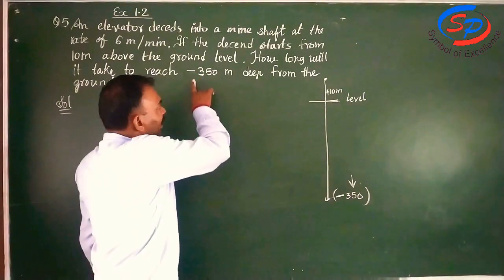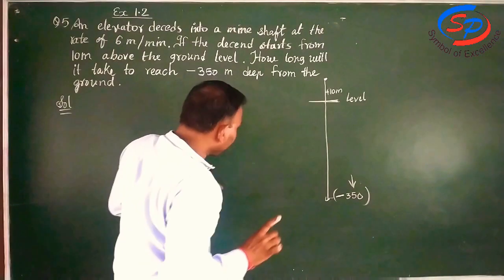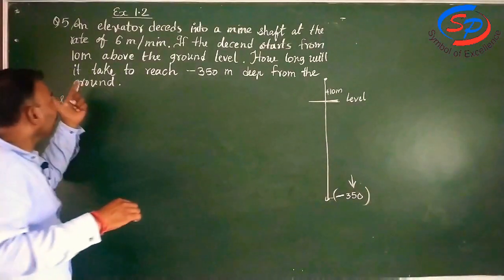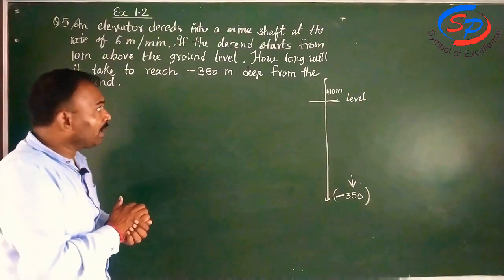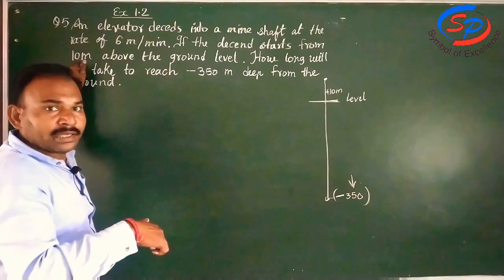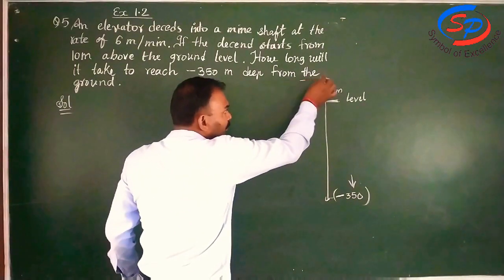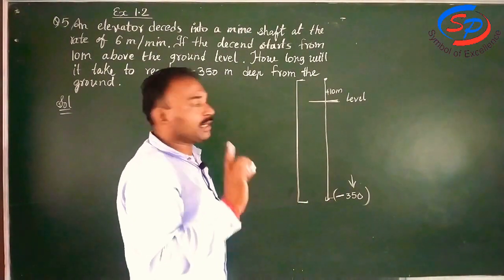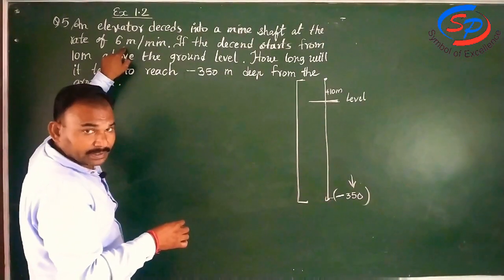The minus sign is here. This shows that we are going under the ground. That's why we don't have to pay attention to this sign right now in the sum. This only shows that we are going deep inside the ground. We have to tell how much time it takes. First of all, we have to calculate: it starts from 10 meter above and has to travel total 350 meter deep. So actually we have to calculate the total distance from this point to 350 meter.